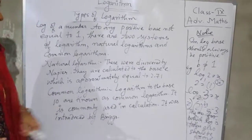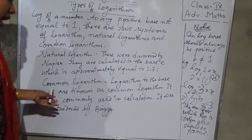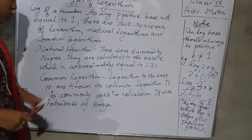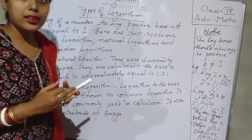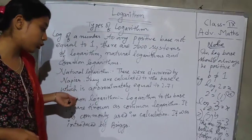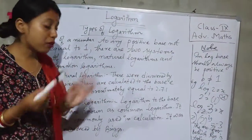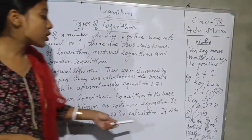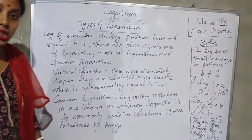Common logarithm is the logarithm to the base 10 and is known as common logarithm. It is commonly used in calculation. Most calculations use base 10, and it was introduced by Briggs.